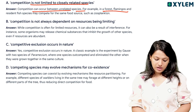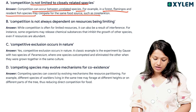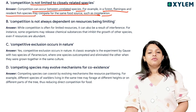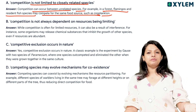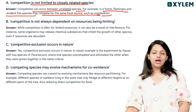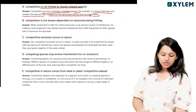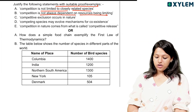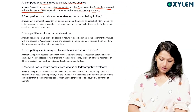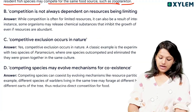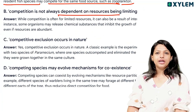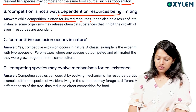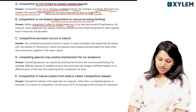For example, flamingos and fish may compete for the same food resources such as zooplankton. Food resources are shared between different species. Also, competition is not always dependent on resources being limited. While competition is often for limited resources, it can also be the result of interference.